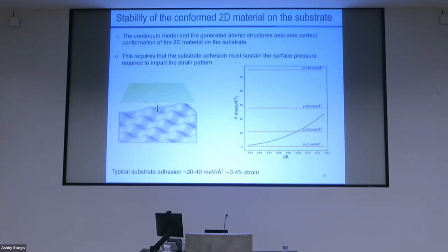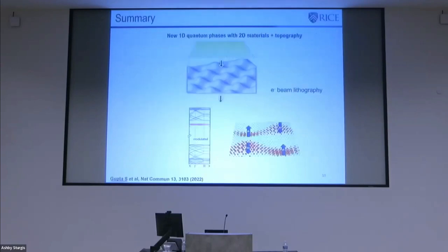Here is the plot showing the maximum surface pressure as a function of this aspect ratio of the substrate. This red line shows the adhesion force required to sustain the deformation. For example, typical substrates have an adhesion energy of 20 to 40 millijoules per meter squared, like bulk silicon oxide. From this correlation, one can predict that a maximum strain of roughly two to four percent can be sustained.